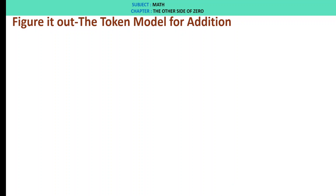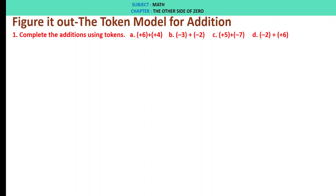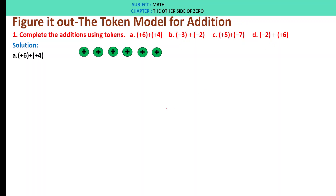Figure it out: the token model for addition. Complete the addition using tokens. A: plus 6 plus 4. So here we have 6 plus tokens, then we add 4 more plus tokens. Total we have 10 plus tokens. Therefore, plus 6 plus 4 is 10.